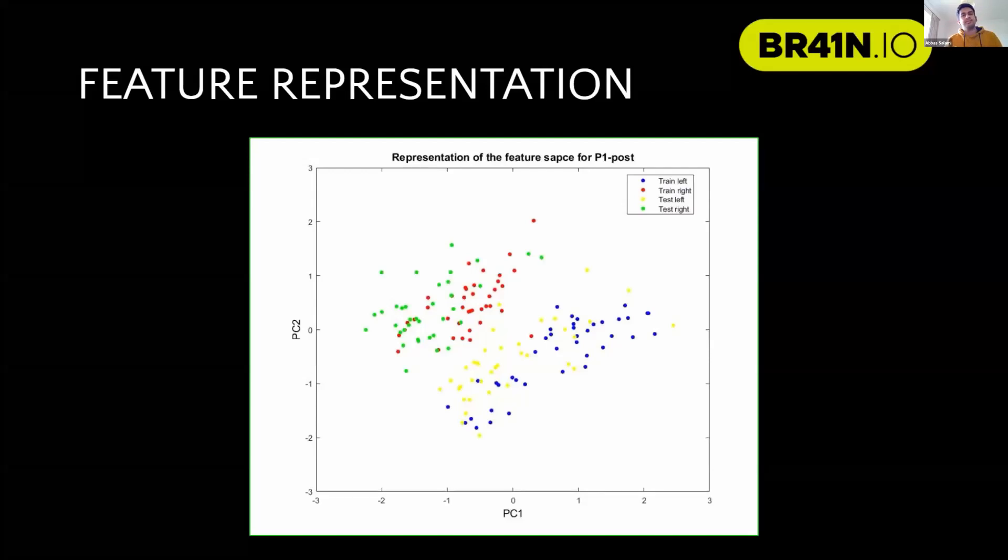One important thing here is that the distribution of the training data and the test data is the same. This implies that the classifier we train on the training data would be efficient on the test data as well, and we don't need to apply some sort of session transfer learning.